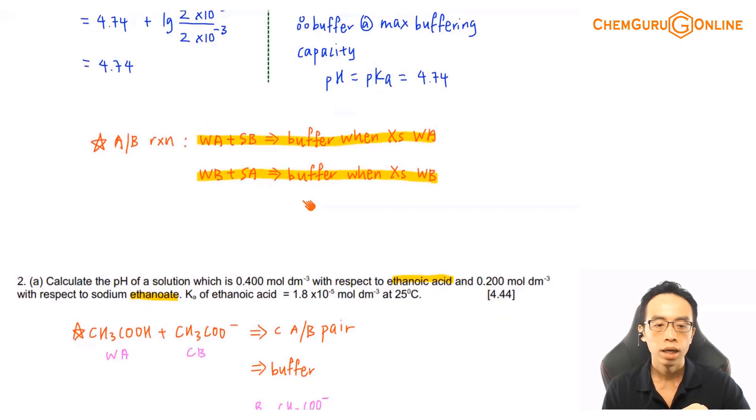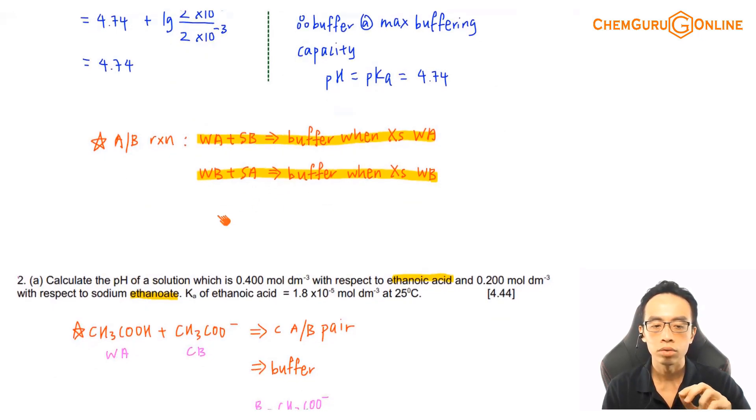Now question 2a is asking us to calculate the pH of a solution which is 0.4 mol per dm³ with respect to ethanoic acid, 0.2 mol per dm³ with respect to sodium ethanoate.